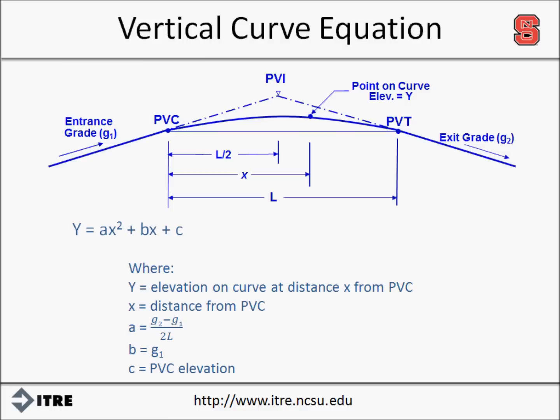All distances must be input in stations, where one station equals 100 feet, and grades in percent. The high or low point of a vertical curve occurs when the slope of the roadway is equal to zero. Therefore, the derivative of the parabolic equation can be used to find the location of the high or low point.